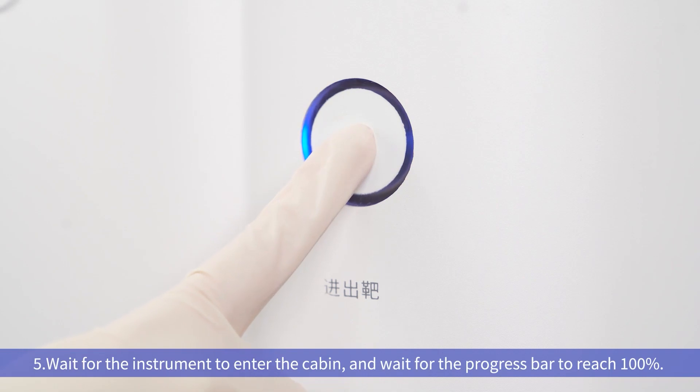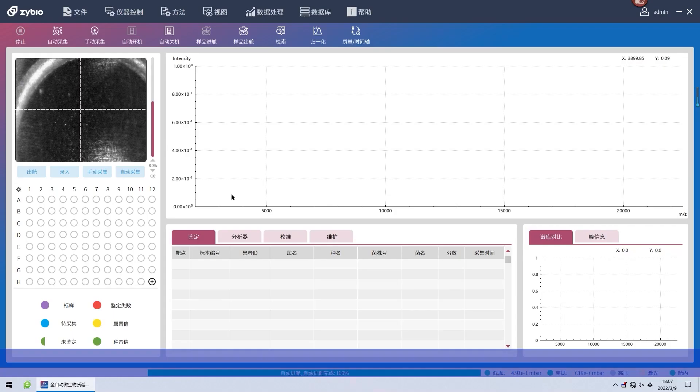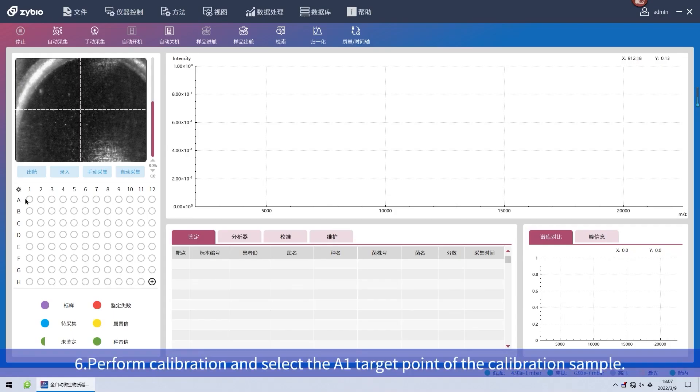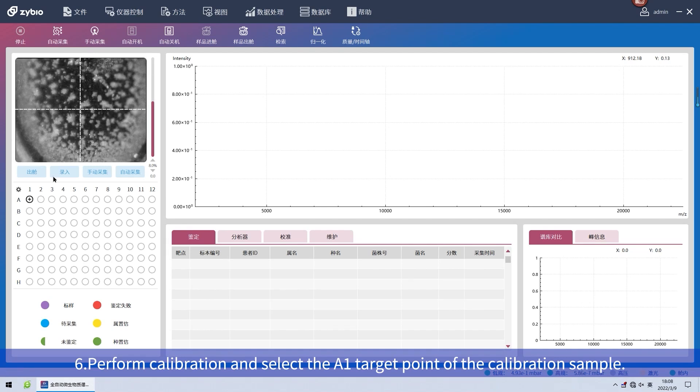Wait for the instrument to enter the cabin and wait for the progress bar to reach 100%. Sixth, perform calibration and select the A1 target point of the calibration sample.